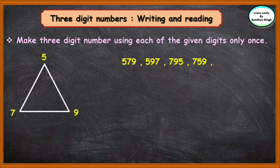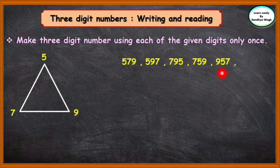Now, to find the next three-digit number, let us take 9 in hundreds place. The number will be 957. Now, let us interchange the tens place and ones place to find the next three-digit number, so the number will be 975.